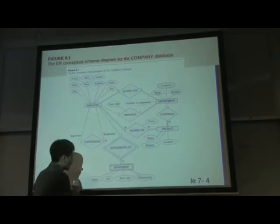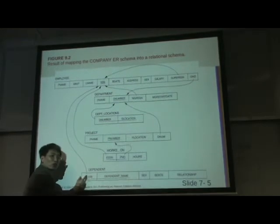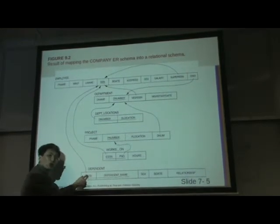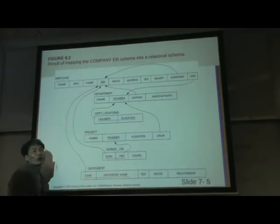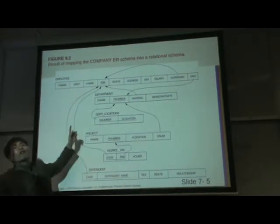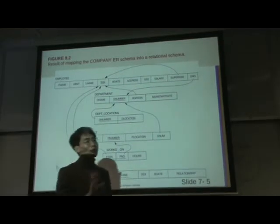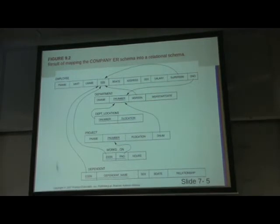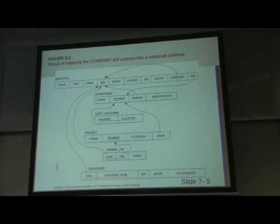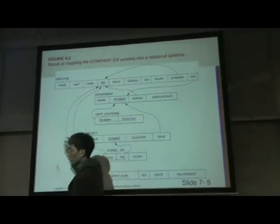After that, use ESSN — employee social security number — which should be in the employee table. So you can create the foreign key. To convert the weak entity: create the relation, make the primary key, then create the foreign key to specify the constraint.